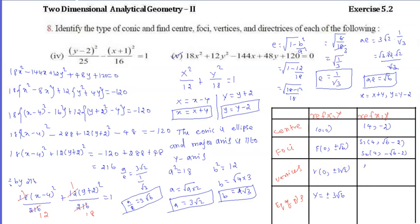Now we calculate the vertices. A1: X = 0 gives x = 4. For the y values: Y = plus 3 root 2 gives y = 3 root 2 minus 2; and Y = minus 3 root 2 gives y = minus 3 root 2 minus 2. So the vertices are (4, 3 root 2 minus 2) and (4, minus 3 root 2 minus 2).